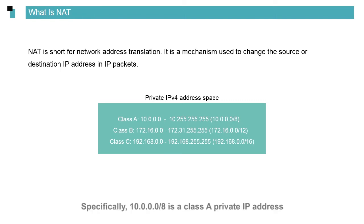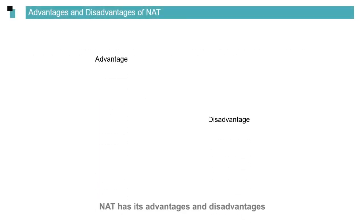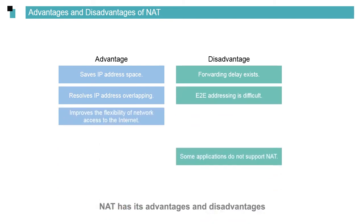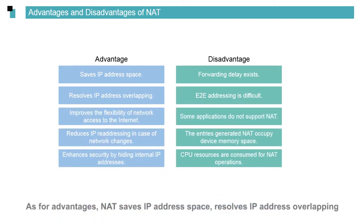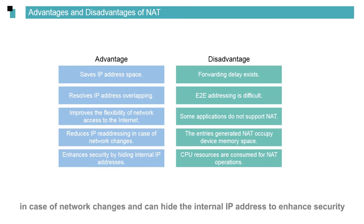Specifically, 10.0.0.0/8 is a Class A private IP address, and 172.16.0.0/12 is a Class B private IP address. NAT has its advantages and disadvantages. As for advantages, NAT saves IP address space, resolves IP address overlapping, improves flexibility in network access to the Internet, reduces the difficulty of IP readdressing in case of network changes, and can hide the internal IP address to enhance security.